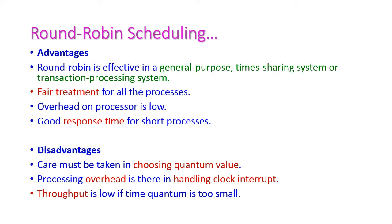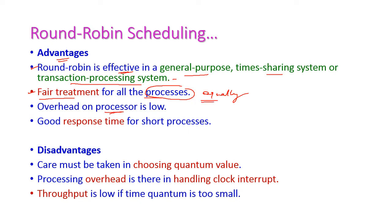Advantages of the round robin algorithm: it is very effective in general purpose time sharing systems or transaction processing systems. There is fair treatment of all processes because all processes are treated equally. Overhead on processes is low because equal priority is given to all processes. Hence, the response time is very good for short processes.